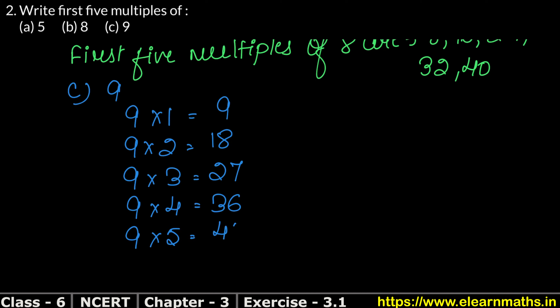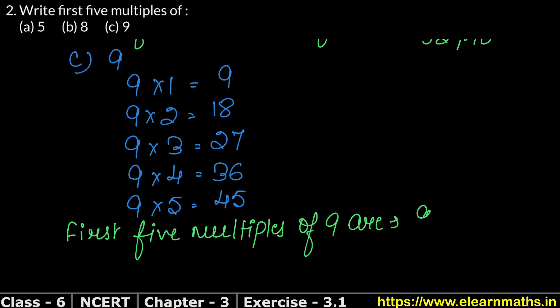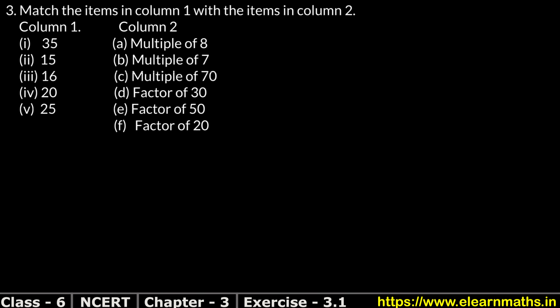9 multiplied by 5 gives 45. So the first 5 multiples of 9 are: 9, 18, 27, 36, and 45. That is the answer.